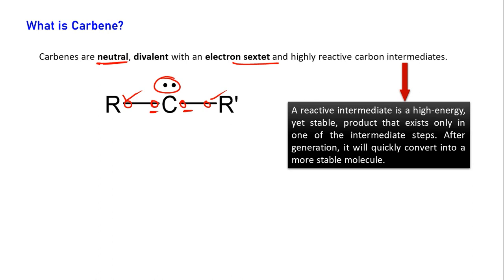A reactive intermediate is high energy but has some kind of stability, and it exists only in one of the intermediate steps. For example, if you are forming B starting from A, in between A and B there will be some reactive intermediate, and that may be carbene — though it is not the only example. After generation, as it is not very stable, it will convert into some more stable molecule.